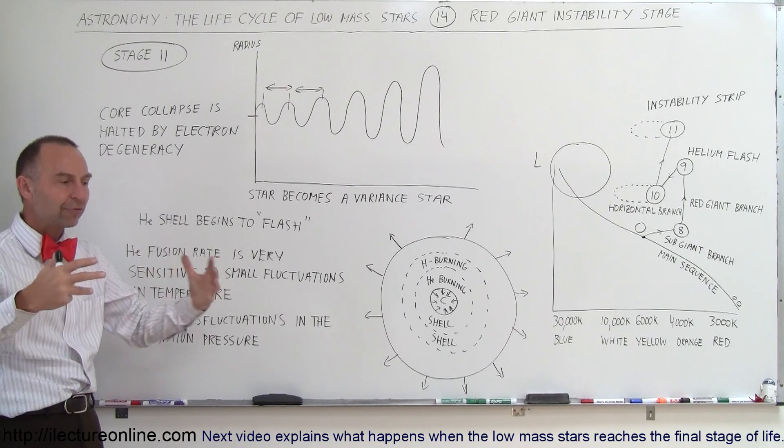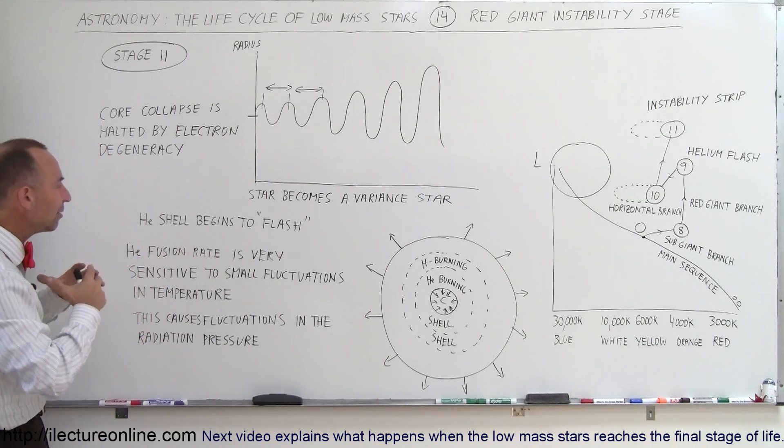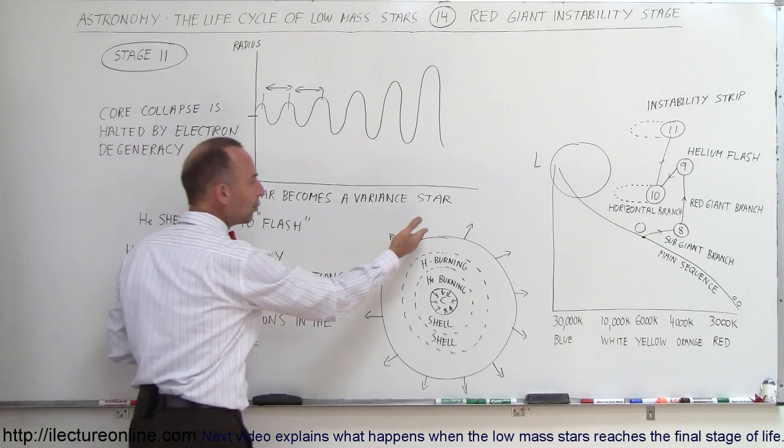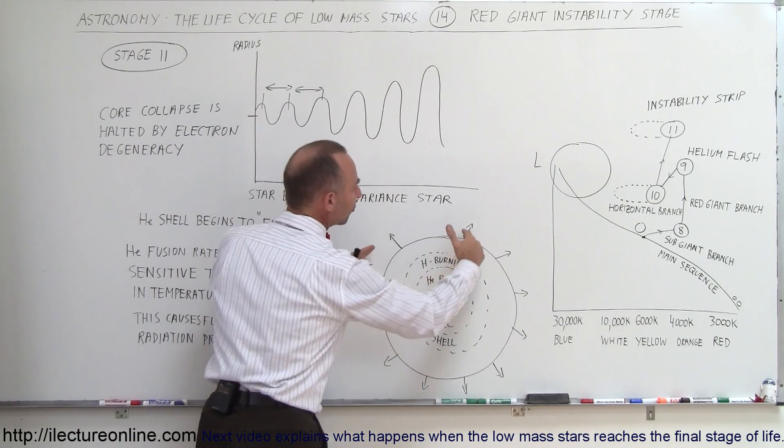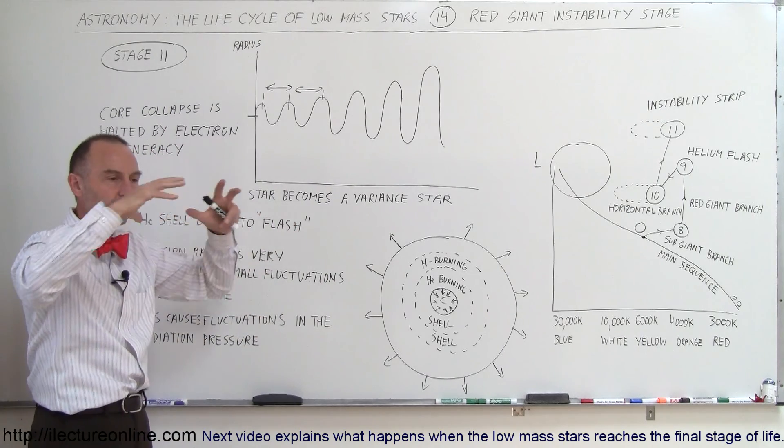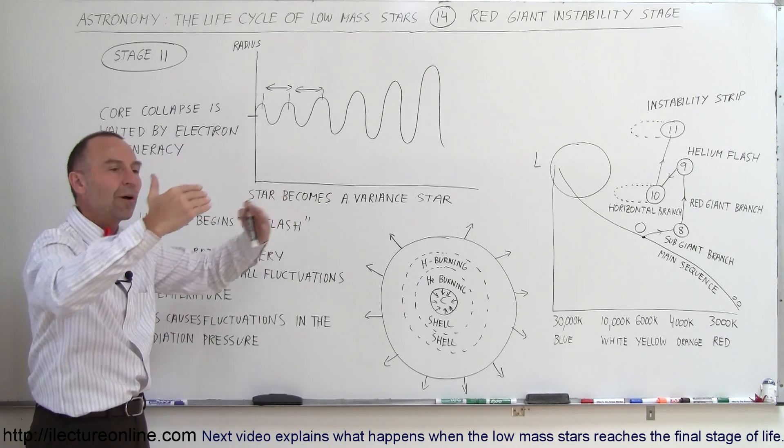They will continue to fluctuate. During that time, these bursts of radiation pressure cause the outer regions of the star to slowly drift and fade away. Every time there's another pulse, more of the star's surface will slowly move away.